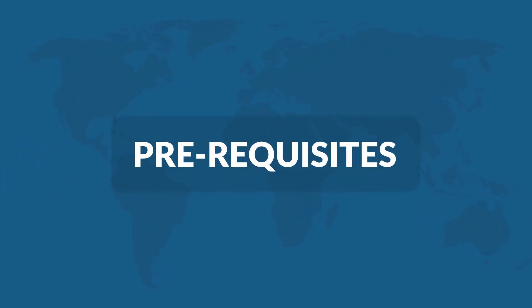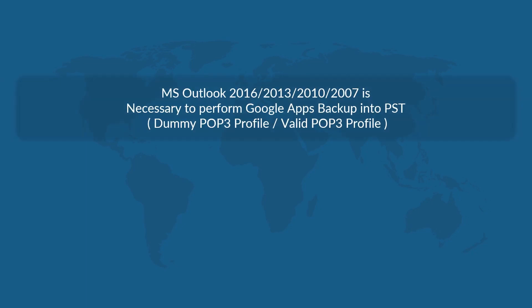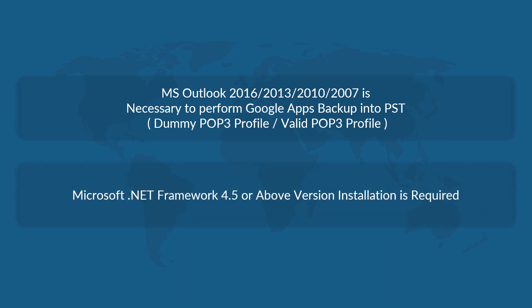Let's check out the prerequisites before installing the software. Make sure that any of the Microsoft Outlook versions mentioned here is installed on your system for the smooth functioning of Google Apps backup into PST. Also make sure that Microsoft .NET Framework 4.5 or any above version is installed on your system.